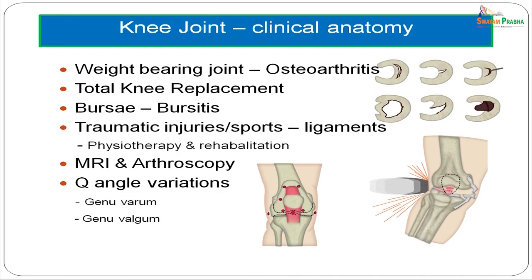First, a few words about the clinical anatomy of the knee joint. As you know, the knee joint is a weight-bearing joint and, as all weight-bearing joints, it is prone to osteoarthritis. Osteoarthritis primarily results in destruction of the articular cartilage and manifests as severe pain, swelling and restriction of movements. While the initial forms can be treated with lifestyle changes and simple analgesia, advanced forms will require a total knee replacement. The knee joint has a large number of synovial fluid-filled sacs called bursae around the joint to facilitate movement of the ligaments and tendons.